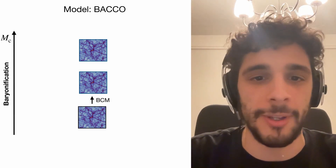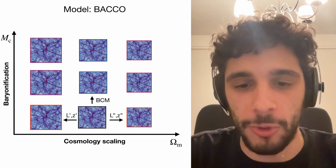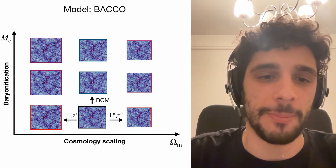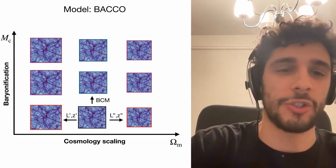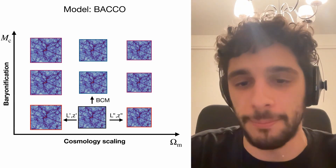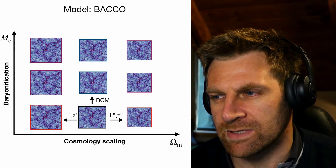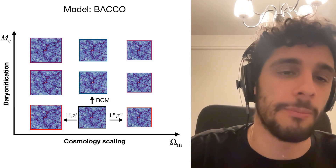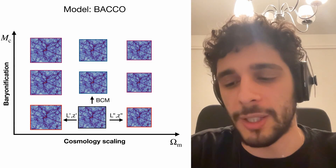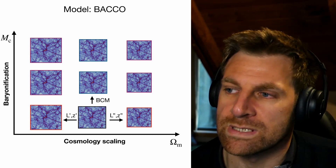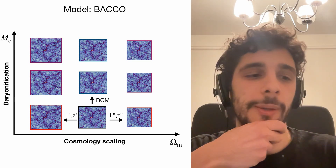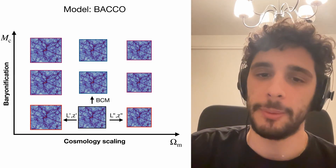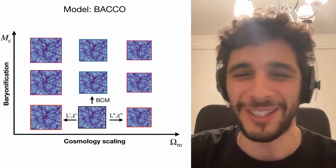To handle sample variance we use the paired-and-fixed methodology: run two simulations with the same fixed amplitude of the power spectrum but opposite phases. Where one has a huge void, the other has a supercluster. Taking the mean largely suppresses the cosmic variance. Then we apply baryonification on top of the gravity-only simulation — displacing particles inside halos to account for galaxies, gas, and AGN/supernovae feedback — with seven free baryonic parameters spanning different baryonic scenarios.